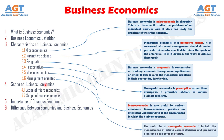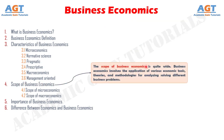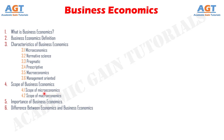The scope of business economics is quite wide. Business economics involves the application of various economic tools, theories, and methodologies for analyzing and solving different business problems. There are two categories of business issues to which economic theories can be directly applied: Number 1, microeconomics applied to internal or operational issues, and Number 2, macroeconomics applied to external or environmental issues. The scope of business economics may be discussed under these two headers.